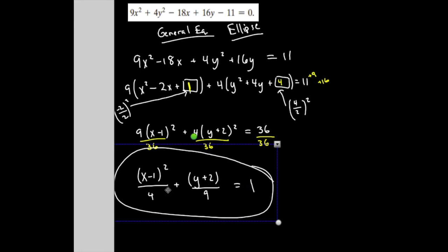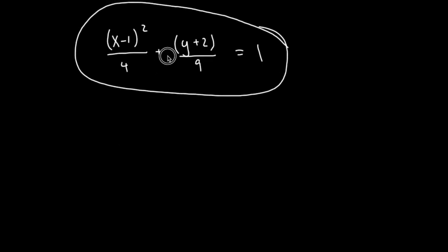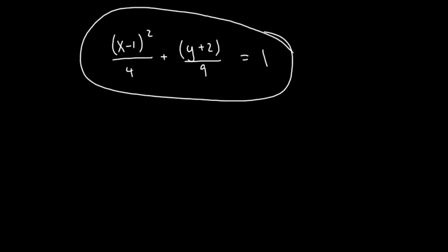Let me identify some of the pieces. My center is at (1, -2). The largest denominator is underneath the y, so my major axis is vertical. a is the square root of 9, which is 3, and b is the square root of 4, which is 2.